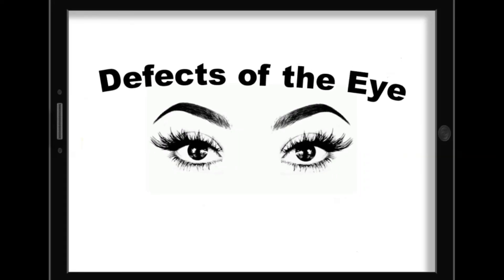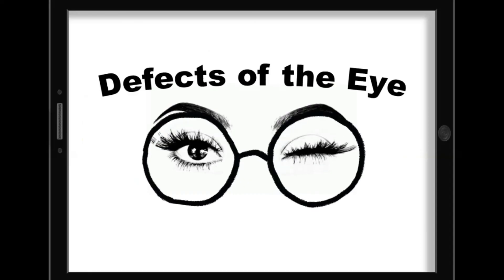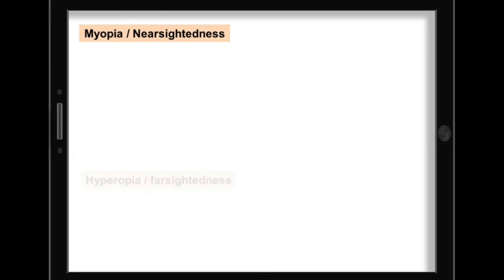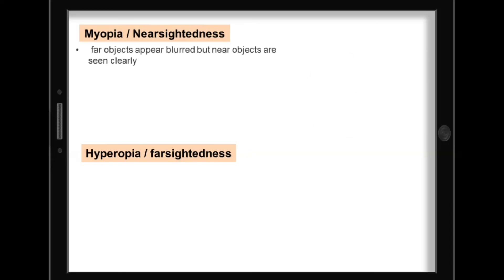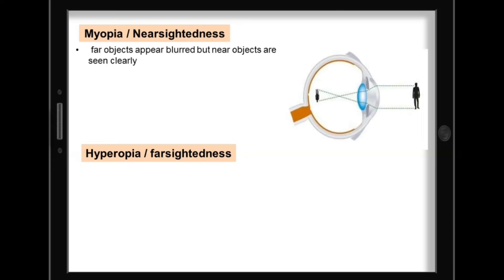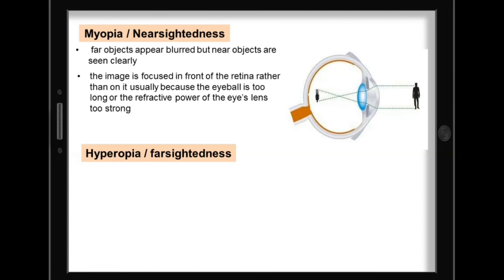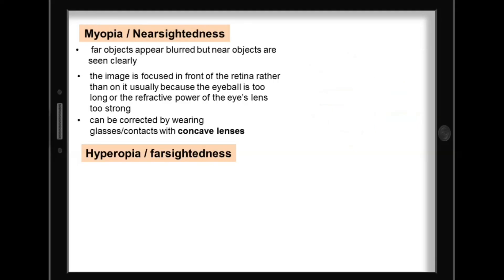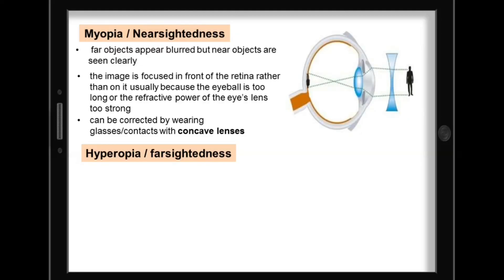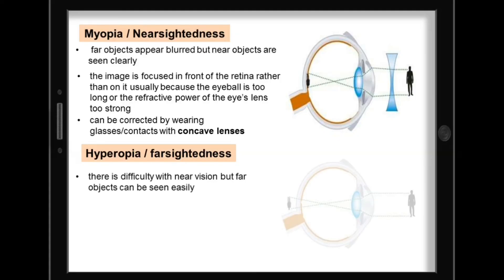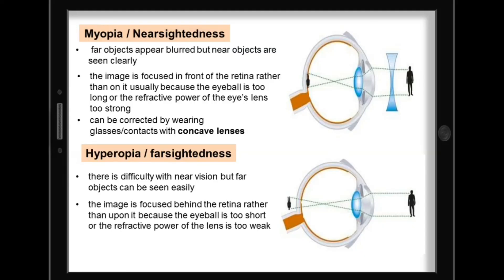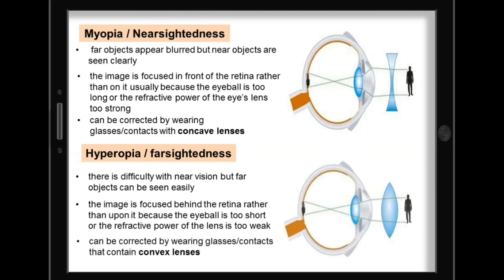As we age, the cornea and the lens can have defects. Here are the common defects of the eye. We have myopia or nearsightedness and hyperopia or farsightedness. For myopia, far objects appear blurred but near objects are seen clearly. The image is focused in front of the retina rather than on it, usually because the eyeball is too long or the refractive power of the eye lens is too strong. This can be corrected by wearing glasses or contacts with concave lenses. For hyperopia, there is difficulty with near vision but far objects can be seen easily. The image is focused behind the retina because the eyeball is too short or the refractive power of the lens is too weak. This can be corrected by wearing glasses or contacts that contain convex lenses.